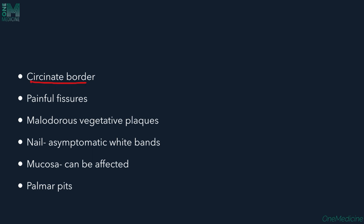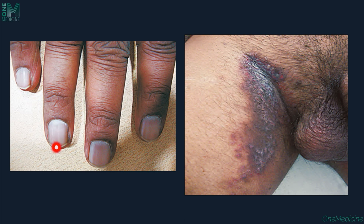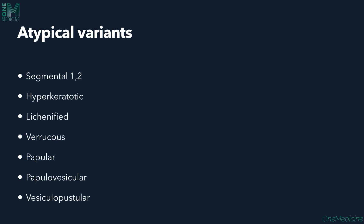The lesions can have circinate borders, with painful fissures, and sometimes malodorous vegetative plaques similar to pemphigus vegetans. Nails can show asymptomatic white bands. Mucosa can occasionally be affected, and palmar pits can be seen. Atypical forms include: segmental type 1 and type 2, hyperkeratotic form with keratotic lesions, lichenified form with lichen planus-like plaques, and a vesicopapular variant.